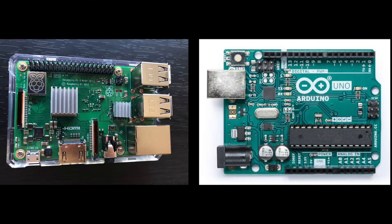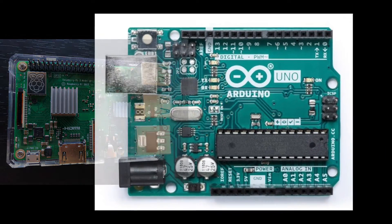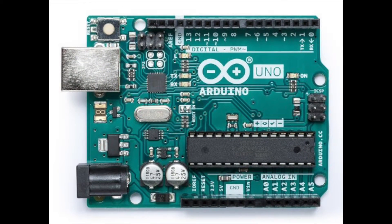A Raspberry Pi runs a full operating system. You can connect a mouse, keyboard, and monitor to it and use it like a normal computer. You don't do that with the Arduino board. Instead, you program it to do a usually singular task that you want it to perform, and that's all it does while it has power. That's not to say the Arduino is limited — far from it. The sky is the limit of what you can do with it.